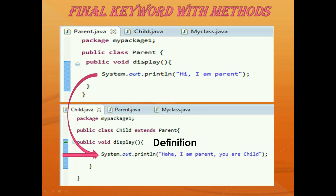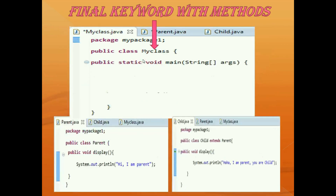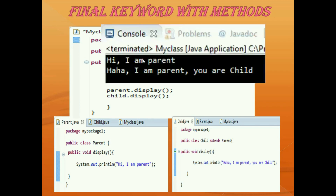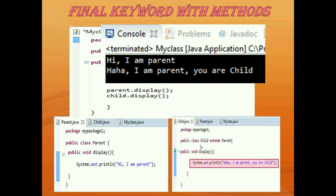To check this, we go to the main class and create an object of the parent class and an object of the child class. Then we call parent.display() and child.display(), compile and run the program. We can see in the output: the parent says 'Hi I am parent,' but the child also says 'Haha I am parent, you are the child.' So the display method of the child has changed — overridden — the definition of the parent display method, which creates confusion.